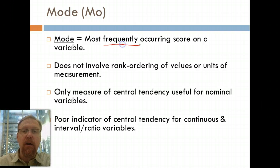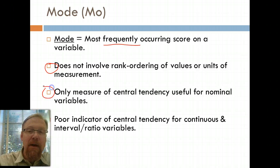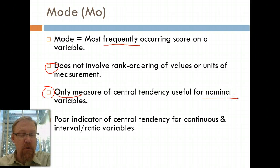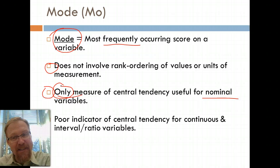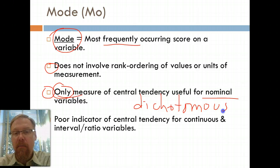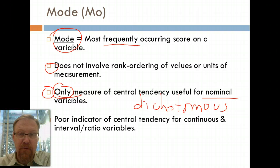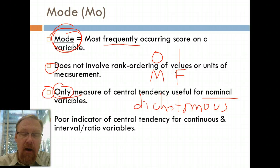The mode is the most frequently occurring score on a variable. That's why it's the frequency idea. It does not involve rank ordering of values or units of measurement. It is the only measure of central tendency useful for nominal variables. So if you have a nominal variable you're going to want to be using the mode. Now there are some exceptions to that. If you have a dichotomous nominal variable, like let's say a student's sex or gender where you have male or female, and you might rank that 0 and 1, technically the only measure of central tendency for nominal variables is the mode. And so you can count how many males and how many females. But when you have dichotomous variables like this, especially 0s and 1s,